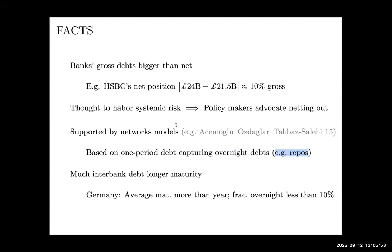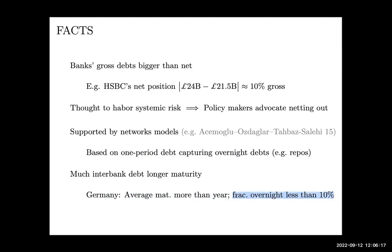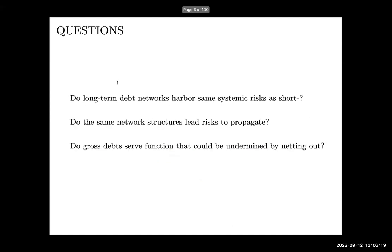It turns out that a lot of interbank debt is actually of longer maturity. Papers looking at this empirically using German data find that the average maturity of interbank debt is more than one year, and the fraction of overnight debt is less than 10 percent. This paper is about that other roughly 90 percent.